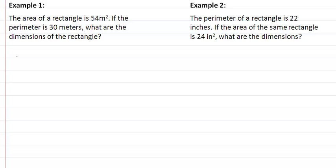So in example one here, we're given the area is equal to 54 meters squared, and our perimeter is equal to 30 meters.